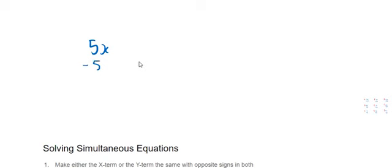Hi guys, so this is a video about simultaneous equations, how to solve them. The first thing I want you to look at is this: if I had something like 5x and minus 5x, they basically cancel each other out, so that equals 0.